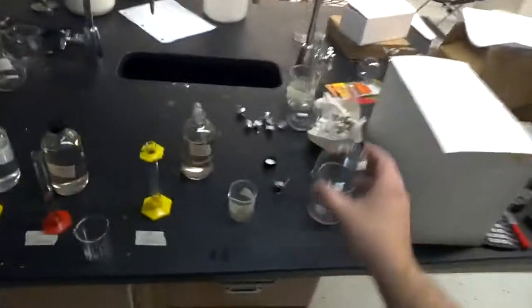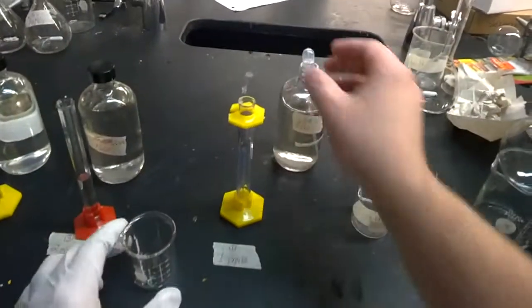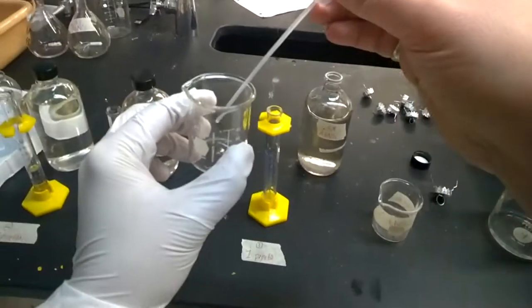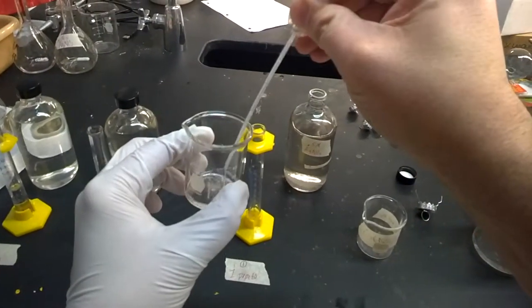So what we want to do first is we want to measure out our silver nitrate. So we're going to take about two and a half milliliters of silver nitrate and add it to our container, our beaker.